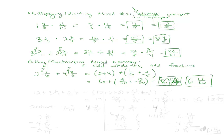You're completely free to convert to improper first and then add — you can do that if you want. If you don't want to think of two different ways to do it, just always convert to improper and then add. Both methods will work.